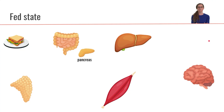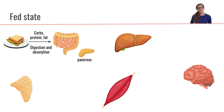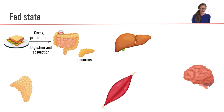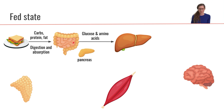Now let's talk through what's going on in each individual organ during these different states. We just ate a meal — this nice sandwich over here. This sandwich has a mixture of carbs, proteins, and fats. So we'll eat the meal and it's going to go through its digestion and absorption process.